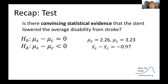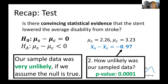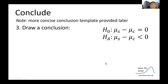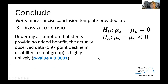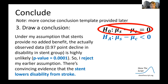To recap: is there convincing statistical evidence that the stent lowered the average disability from stroke given the mean difference of 0.97? We assumed the null was true, evaluated how unlikely our sample data was, and it turned out to be very unlikely. Since it is so unlikely, we reject the null hypothesis — the assumption of no treatment effect — and accept the alternative. There is convincing evidence that the stent lowers disability from stroke, meaning that for the first time in 20 years, we had a new beneficial therapy for stroke patients.